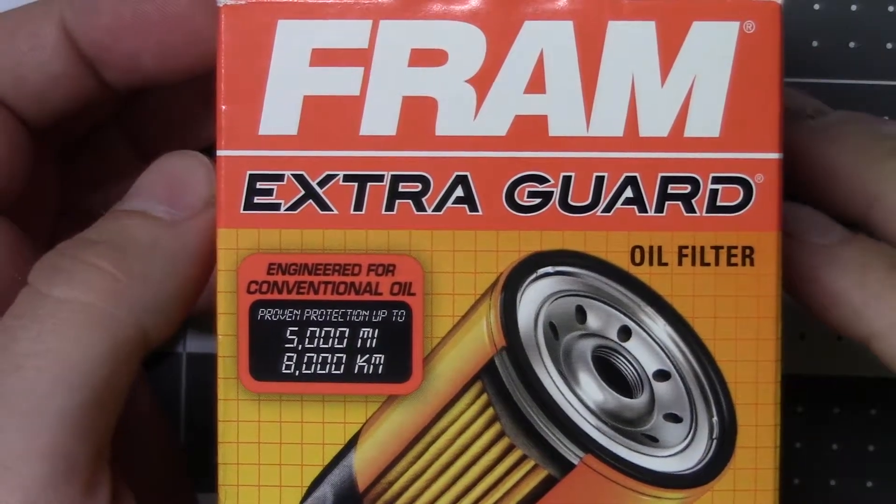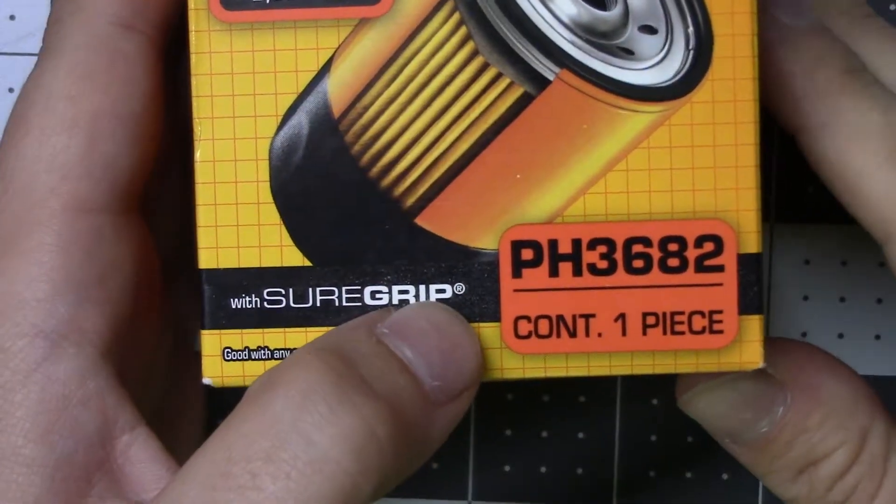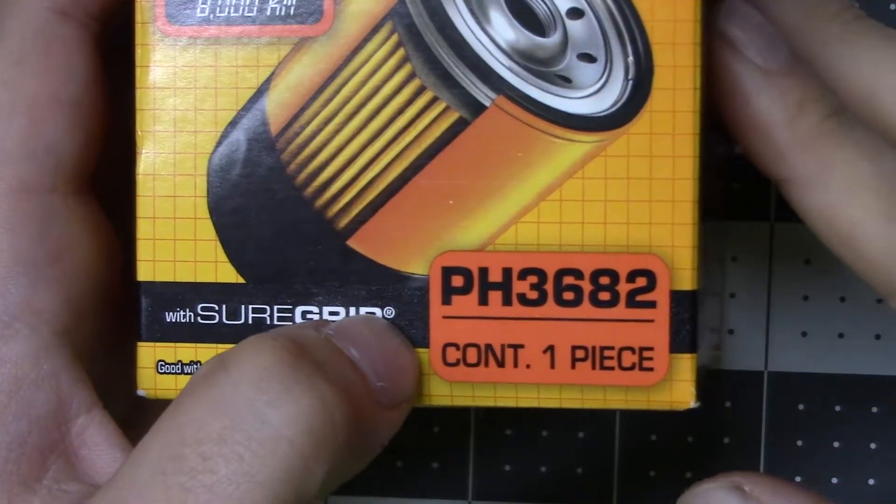Today we're going to do the teardown of a Fram Extra Guard oil filter. This happens to be a pH 3682.